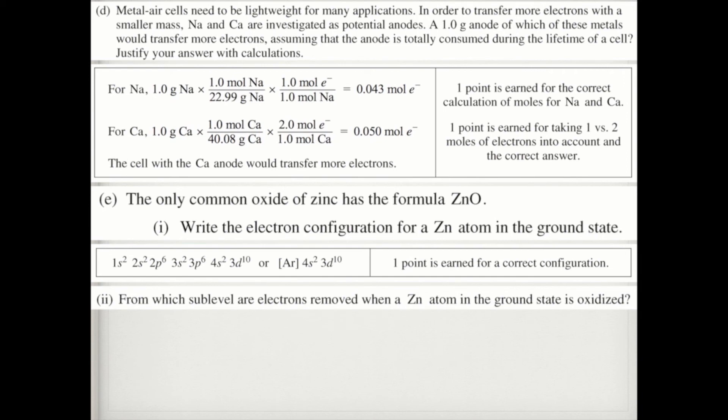In part II, it says from which sub-level are electrons removed when a zinc atom in the ground state is oxidized? Well, you know that. It's whichever is the highest energy level. So that'd be from 4s.